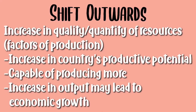When the curve shifts outwards, there is an increase in the country's productive potential. This allows them to produce more and increase their output, which would lead to economic growth. Things like better education and advancement in technology would cause the production possibility curve to shift outwards.